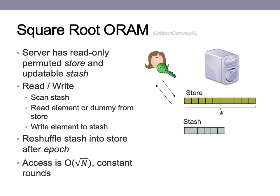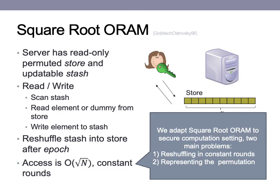This is a good starting point for our own scheme, but there are two main problems that prevent a generic adaptation using a standard secure computation compiler. The first is supporting the reshuffling at the end of an epoch in constant rounds — this is often done using oblivious sorting, and the only known secure computation variants of oblivious sort are not constant round. The second is representing the permutation of the store in a compact way when the client is emulated by the two servers. These are the two main issues that we will focus on addressing during our construction.